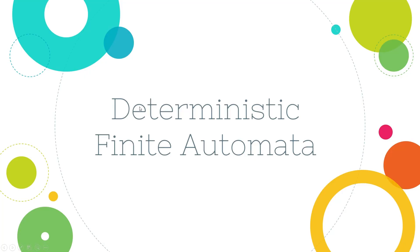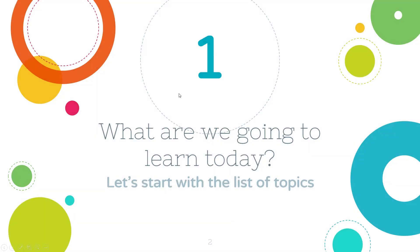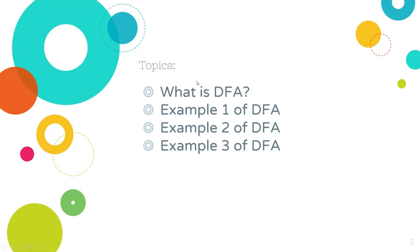Welcome to our third theory of computation tutorial. Today we will be continuing with Deterministic Finite Automata. We have already done an introduction to DFA, so we know what a DFA is. Now we will look at some examples of construction of a DFA and will be constructing different types of DFA.